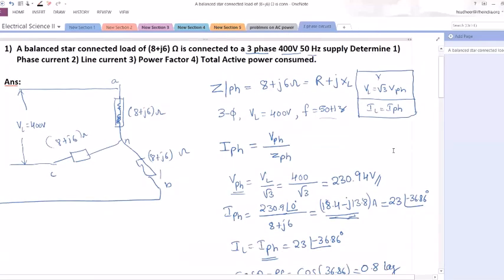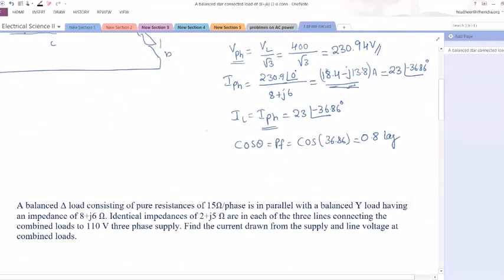So last one is asking total active power consumption. Remember it is a three-phase circuit. So total three-phase power is equal to root 3 into VL IL cos theta you can use, or 3 into Vphase into Iphase into cos theta. Both you will get the same answer. So root 3 into VL into IL into cos theta. That is root 3, VL is 400, IL equal to Iphase, that is 23. Don't take any angle. When you are calculating power, the angle will be taken care by cos theta and sin theta.